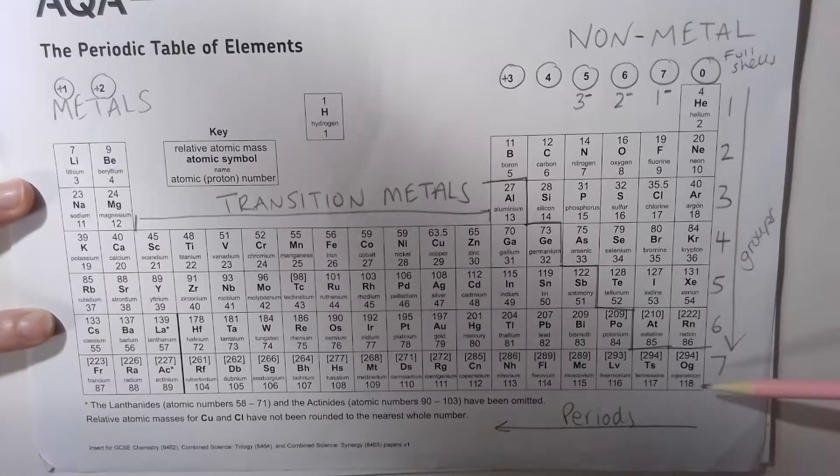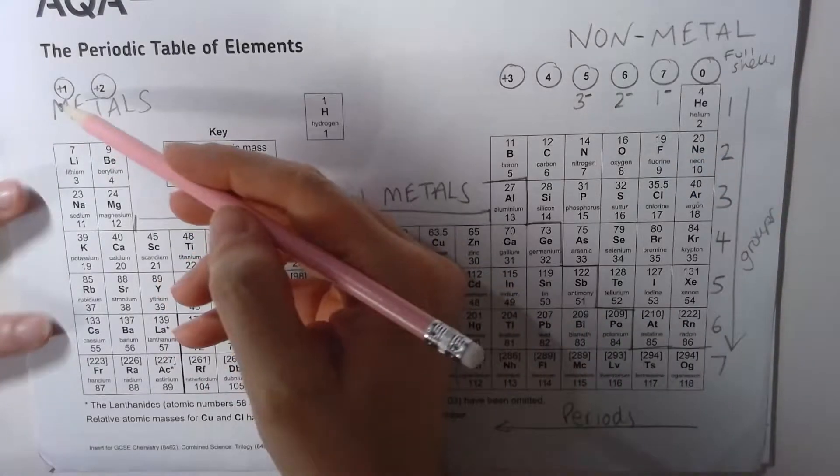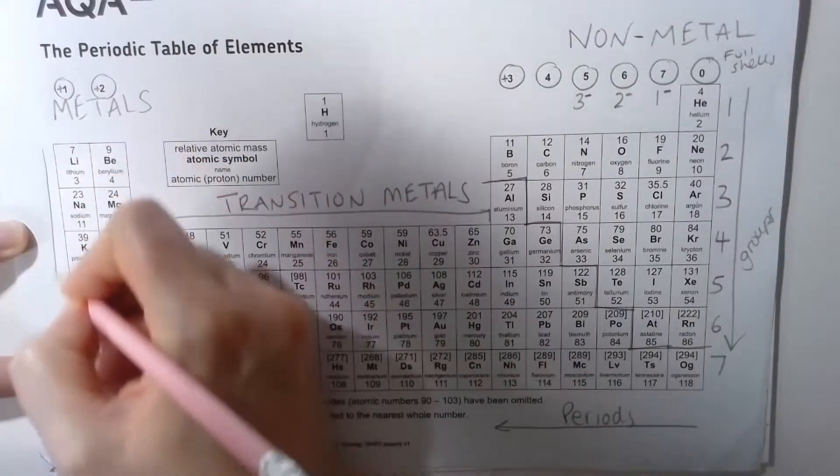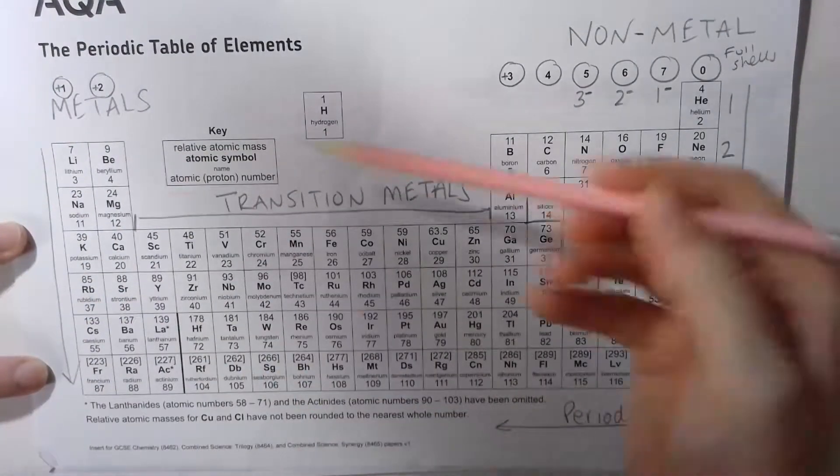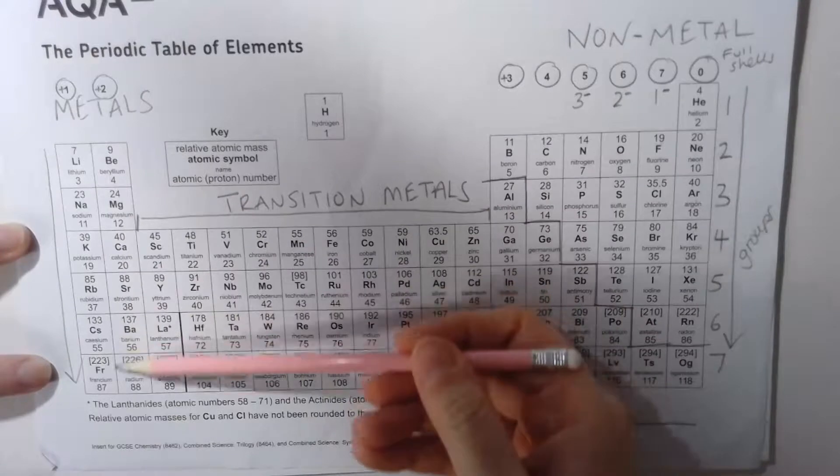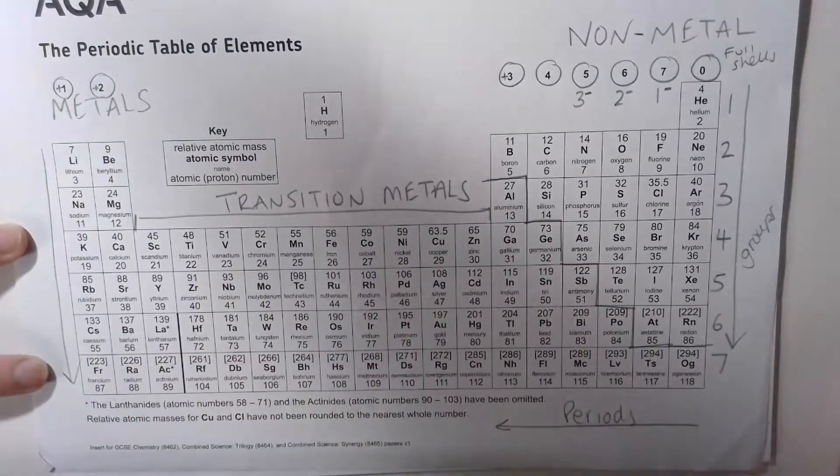Group one are the alkali metals. They get more reactive as you go down because the shells get larger and larger, so that one electron cannot be held by the electrostatic attraction of the nucleus.